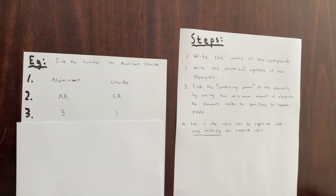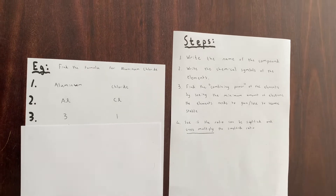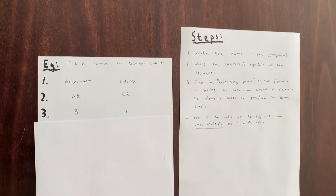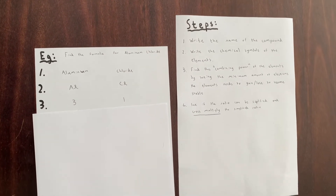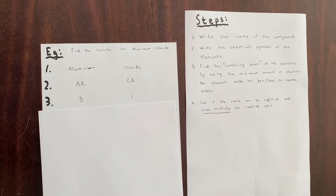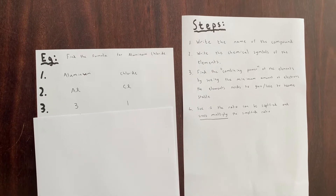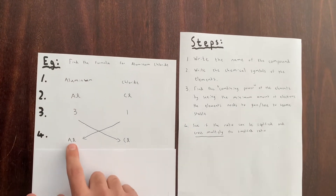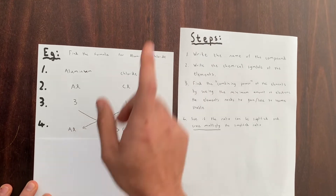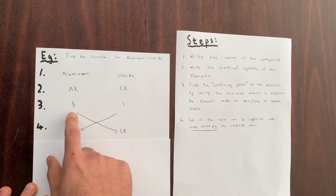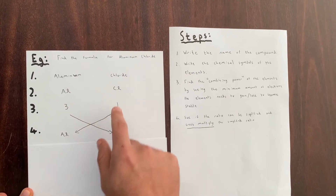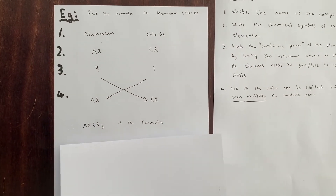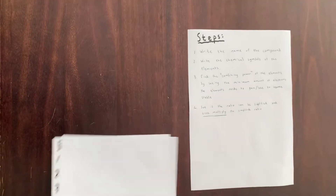Now for step four: we have a ratio of three to one. There's no way to simplify this ratio further without introducing fractions, which doesn't serve any purpose in chemistry. So since that is the most simplified ratio, we write down the two symbols and cross multiply — the three goes to chlorine and the one goes to aluminium. Therefore the formula for aluminium chloride is AlCl₃.